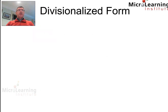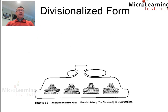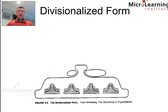Next, we look at what Mintzberg calls the divisionalized form. Here we can see independent entities of Mintzberg's model all encompassed in one overarching divisionalized structure, which has a significant amount of support staff, a little bit of technostructure, and a strategic apex.